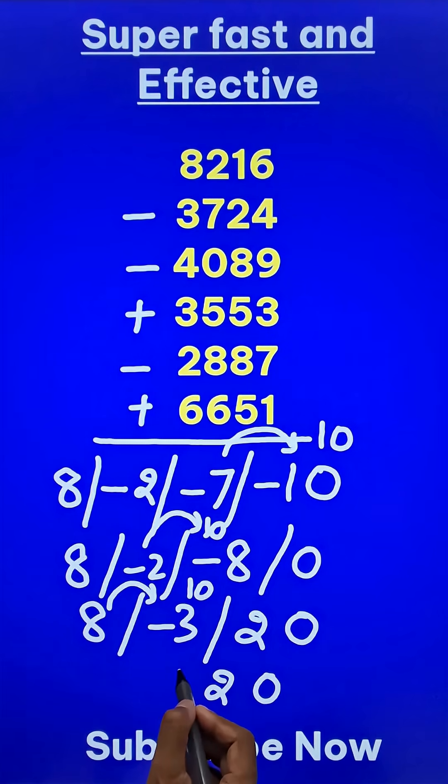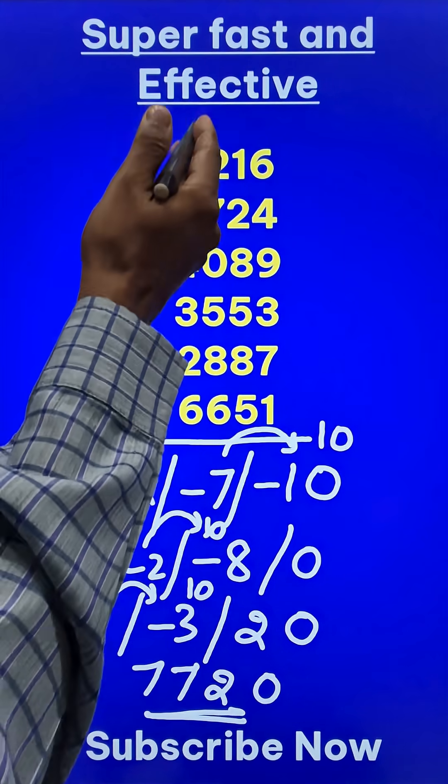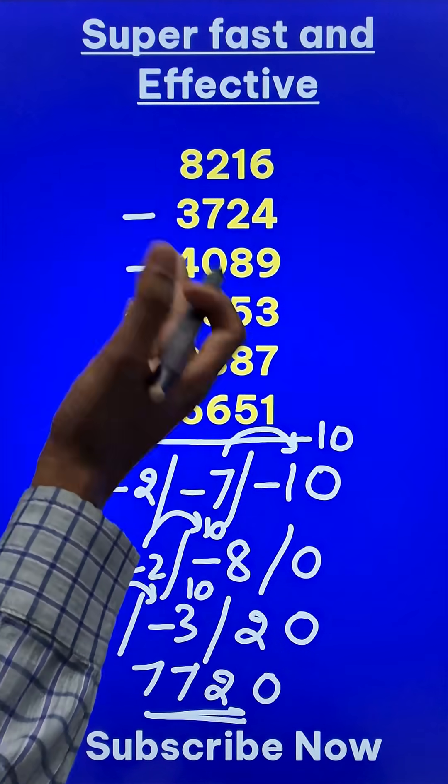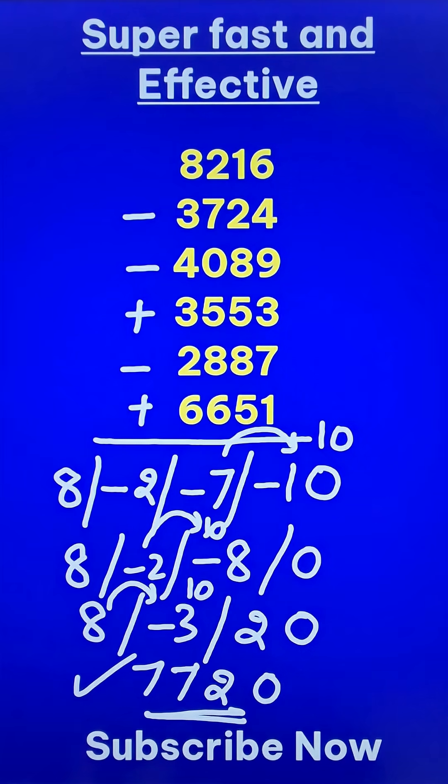So 0, 2, 7 and then 8 gave away 1, so this became 7. And now can you pick up the calculators, add and subtract all of these manually using the calculator and then check. Your answer should be 7720.